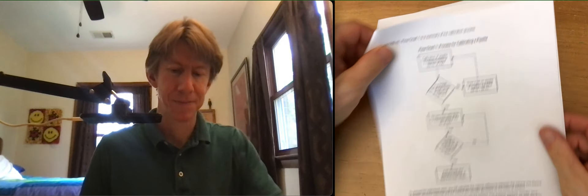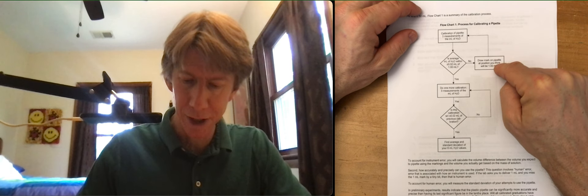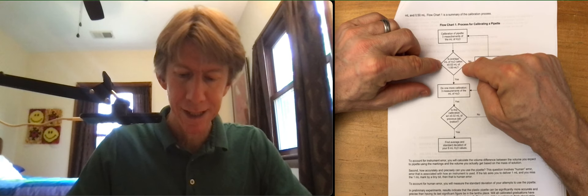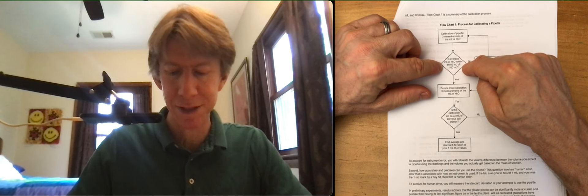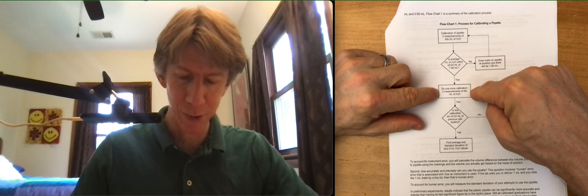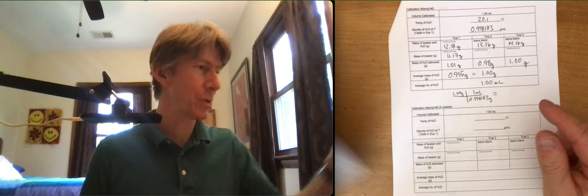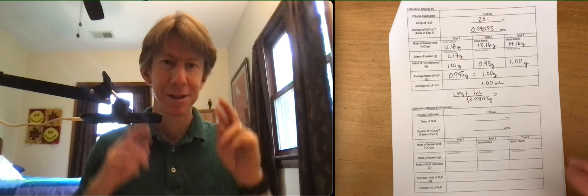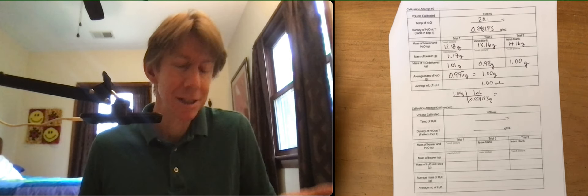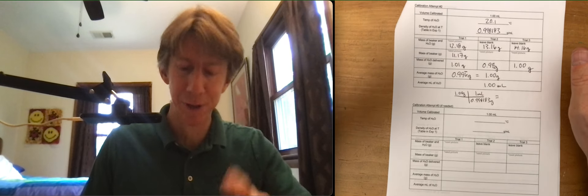Flowchart is our friend. All right, we said we drew a mark. We calibrate three measurements of the milliliters of H2O. Is it within plus or minus 0.02 of 1.00? Yes. Go down here. Do one more calibration with three measurements, and then we may be done. Have our fingers crossed, but we're in reality. It's okay, no matter how it comes out, because we're going to keep doing it until we get it right.